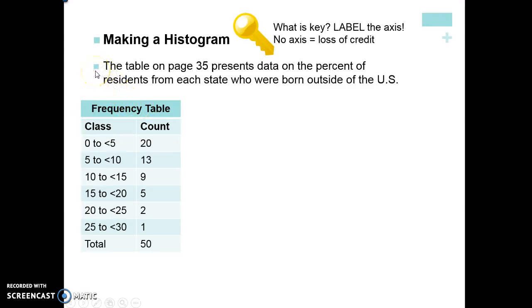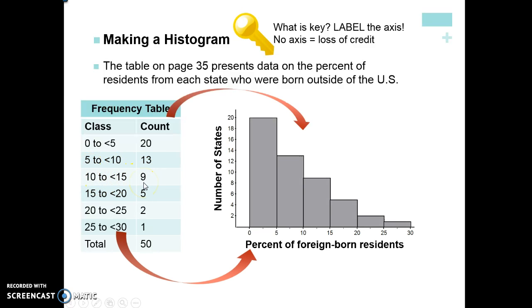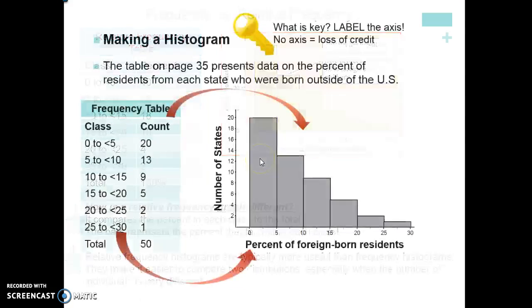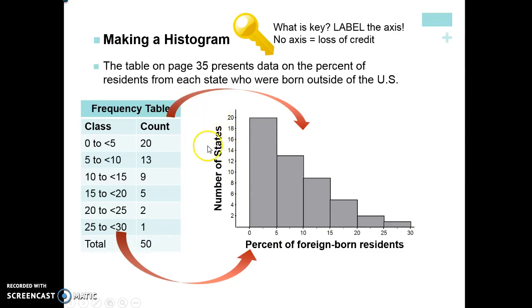We're going to draw a histogram based on the percent of residents from various states who are born outside of the United States. Make sure - number one, label your axis, x and y axis. You have to label it numerically and in context. So this is just a count. The class 0 to 5, so that's what percent of people were born outside the United States. Zero to 5 percent, 20 states have that. Five to 10 percent were born outside the United States, 13 states have that. Ten to 15, nine have that, and so on and so forth. Notice what the axes look like. The percent of foreign-born residents, that's what your classes are. So 5 percent born outside, between 5 and 10, between 10 and 15. And this is the number of states. That's your count. So between 0 and 5 percent were born outside the U.S., 20 of the states had that percent of foreign-born residents. So just make sure you include your labels.